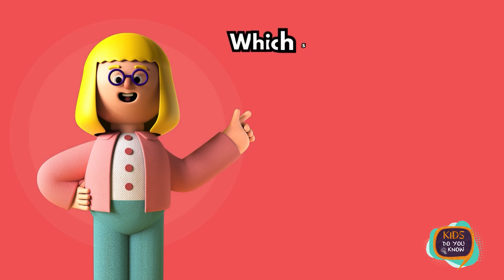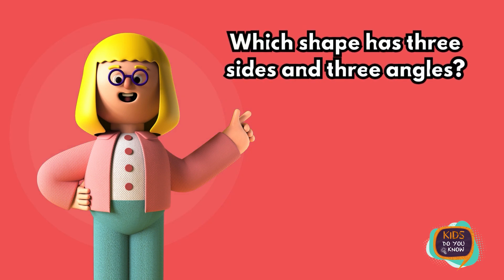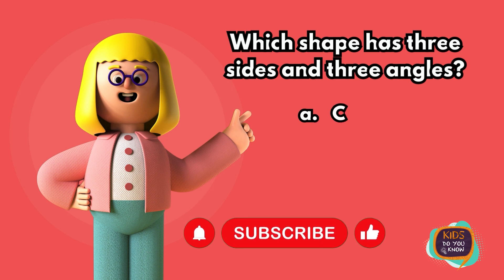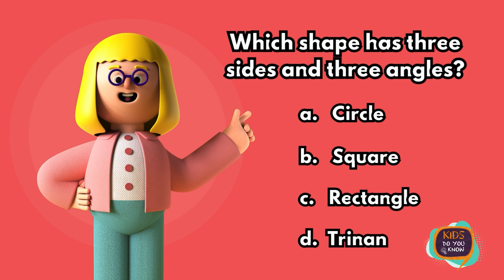Which shape has three sides and three angles? A. Circle. B. Square. C. Rectangle. D. Triangle.